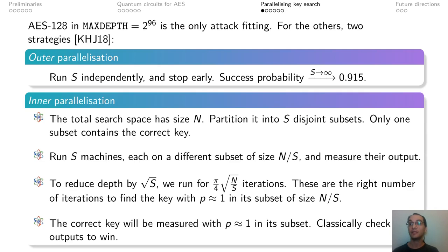An alternative strategy is inner parallelization. Here the key space is partitioned in S disjoint subsets. Of course, only one of these subsets contains the key that we are trying to recover. Then, we run Grover's search on these subsets of the key space. Interestingly, cutting by square root S the depth will still give us probability one of finding the right key in its own partition of the key space. So this allows us to save square root S depth and still have a probability one attack.